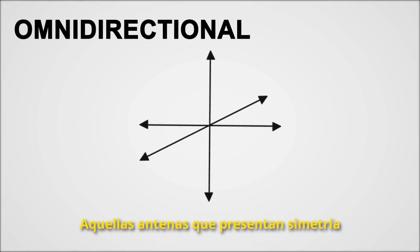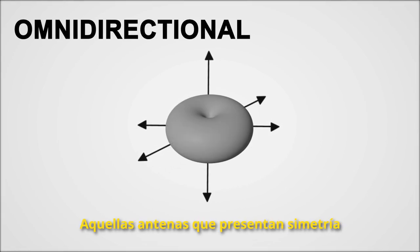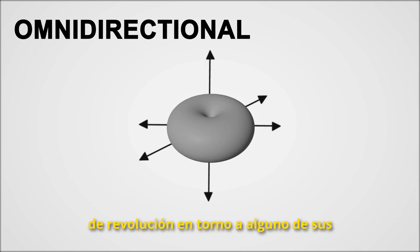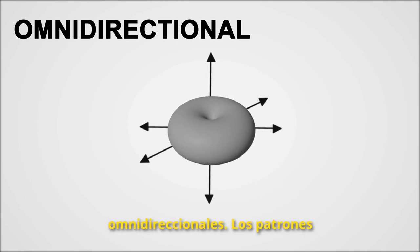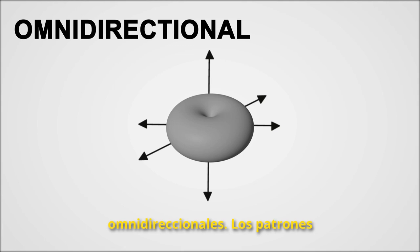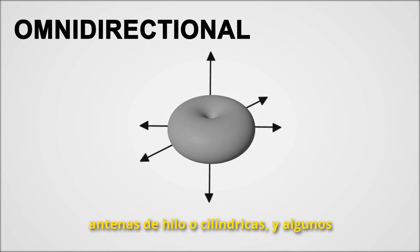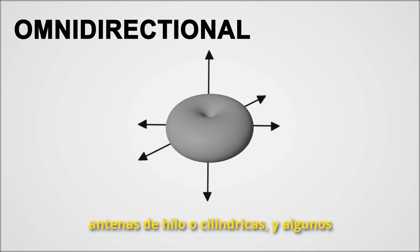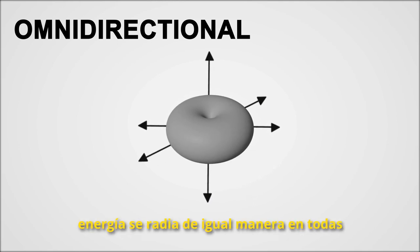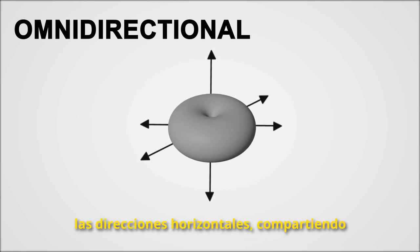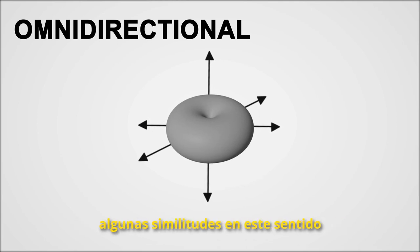Those antennas whose radiation pattern presents symmetry of revolution around one of the main axes are classified as omnidirectional. Omnidirectional patterns can be found in wire or cylindrical antennas, and in some kinds of loops. The energy is radiated equally in all horizontal directions, sharing some similarities in that sense with isotropic patterns.